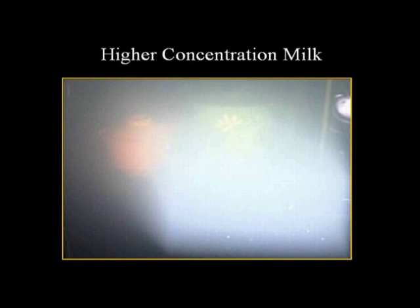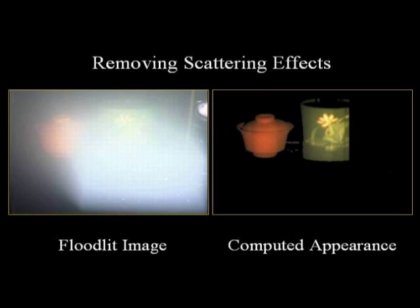Here we show a harder example with higher milk concentration. Notice the significant back scattering and loss of contrast in the floodlit image. We now show the light stripe scan. Notice that the intersections of the stripes with the objects are very dim and are almost invisible towards the end. Even in this case, our methods perform very well. Due to strong attenuation of the light planes and the dull reflectance of the green cup, the handle of the cup is virtually invisible in the input video and hence is not detected.